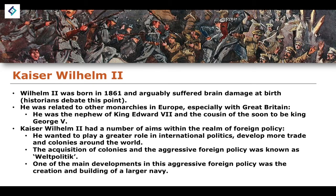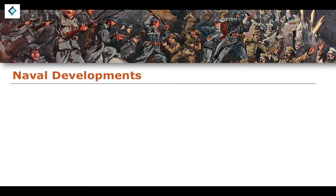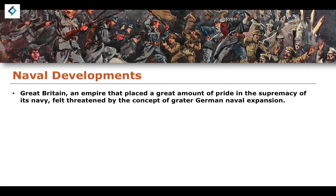One of the main developments of this aggressive foreign policy was the creation and building of a larger navy, as mentioned in the first lesson, and this led to a greater rivalry with Great Britain. Naval developments were very significant because Great Britain was an empire that placed great pride in the supremacy of its navy. There are historical and geographical reasons for this — Great Britain is an island nation and empire, meaning that in order to exert its influence it would have to do so at sea. And so we see a growth in British naval supremacy and a great sense of pride placed in British naval capacities.